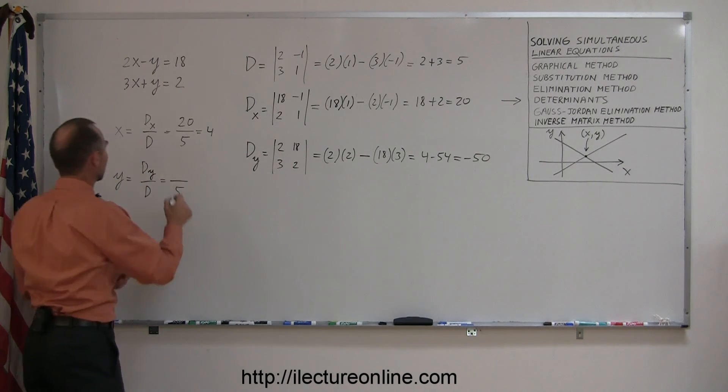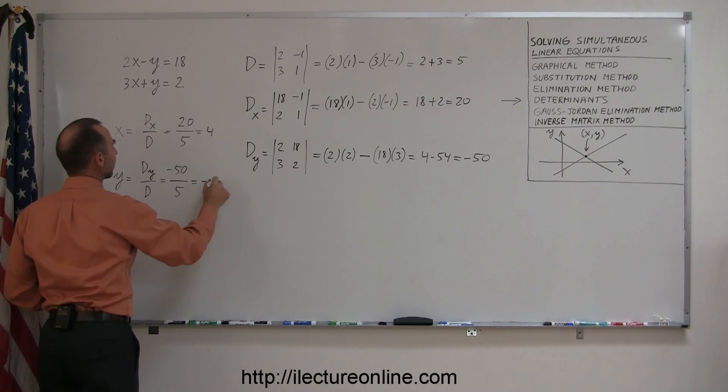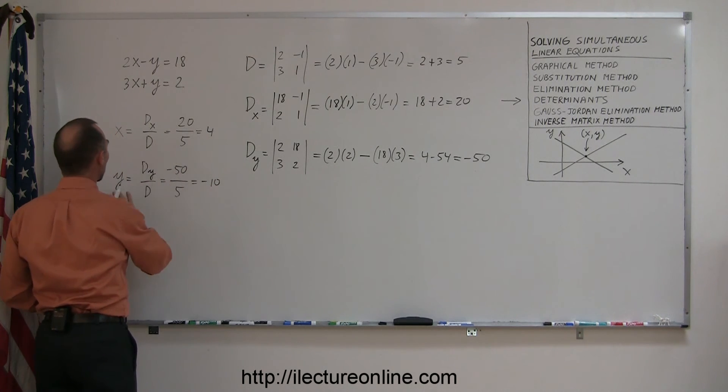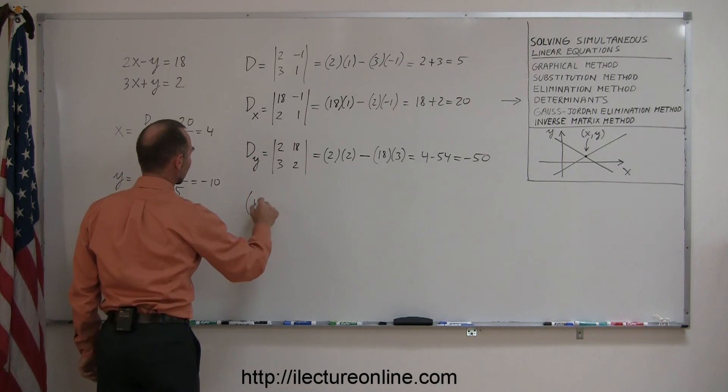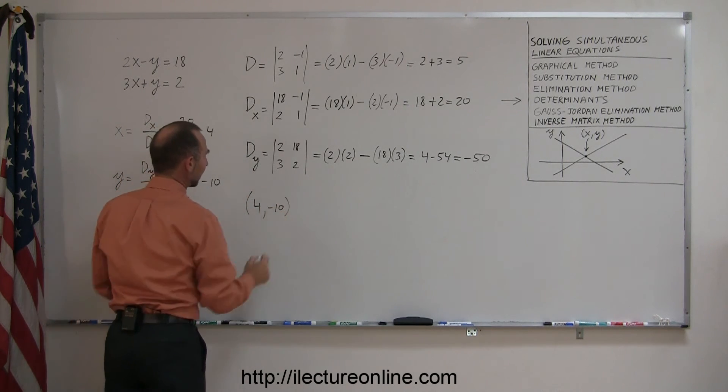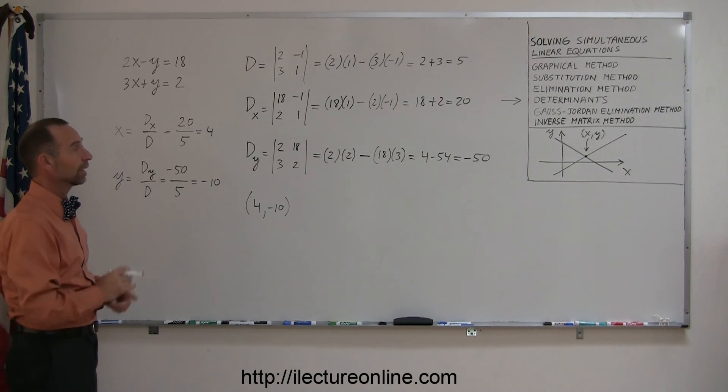We can then put that in here, minus 50, and minus 50 divided by 5 is minus 10. So minus 10 is the y-coordinate of the solution, and 4 is the x-coordinate of the solution, so the solution then becomes 4 and minus 10. That's the point, those are the coordinates of the point where the two lines cross.